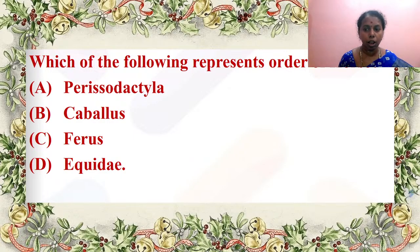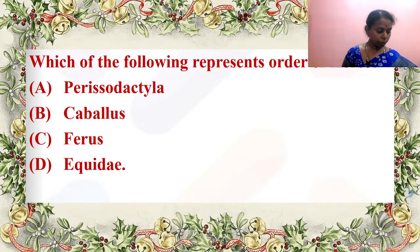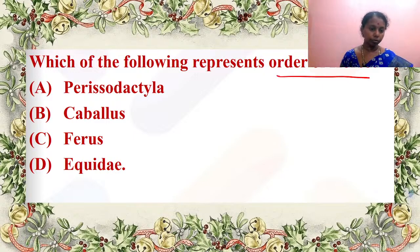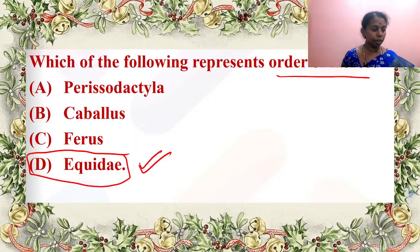Which of the following represents the order of horse? It is Equidae — very correct answer by Aruni, Arunika, and score more.